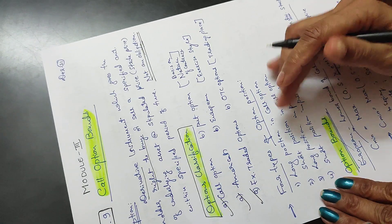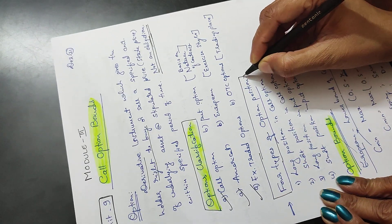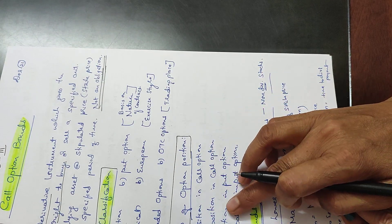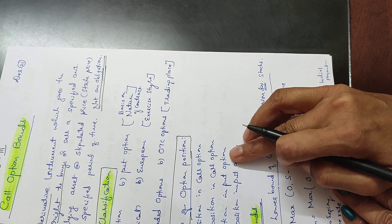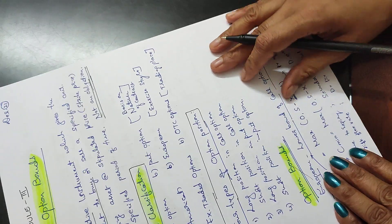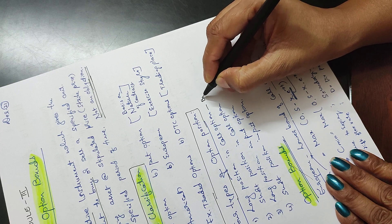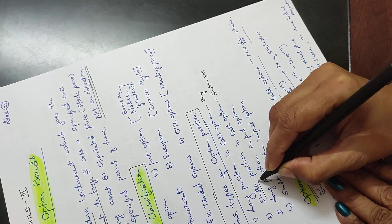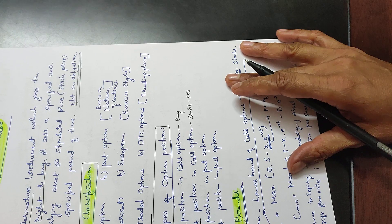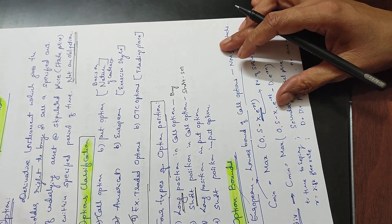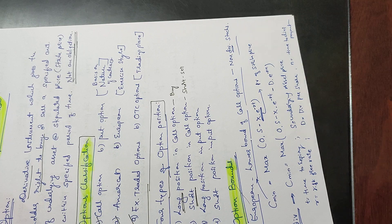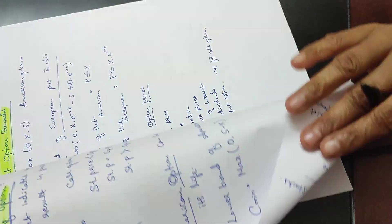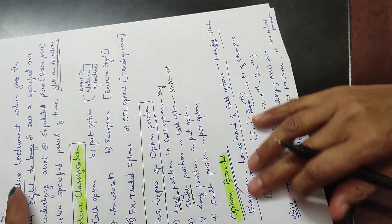There are four types of option positions: long position in the call option, short position in the call option, long position in the put option, and short position in the put option. Long and short — I am long in so and so, I am short in so and so. Now, option bounds: European bounds and American options bounds.